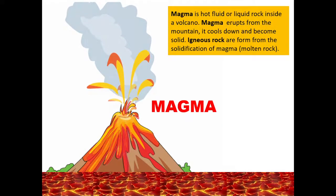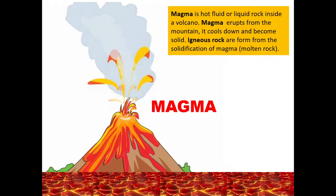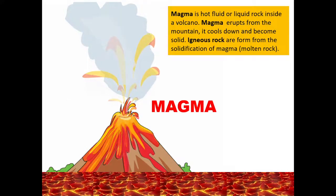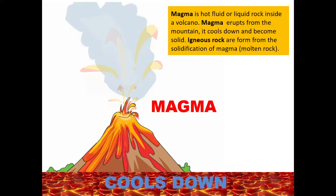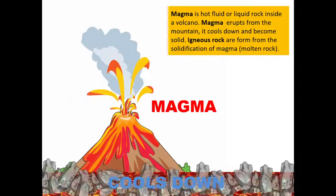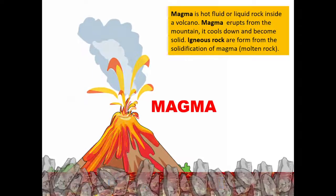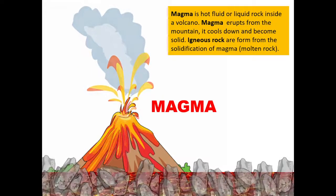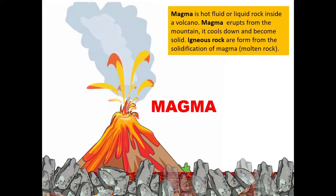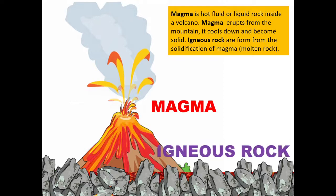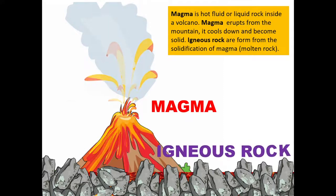Magma is a hot fluid or liquid rock inside a volcano. Magma erupts from the mountain, it cools down and becomes solid. Igneous rocks are formed from the solidification of magma.